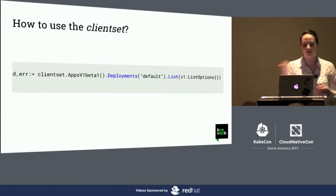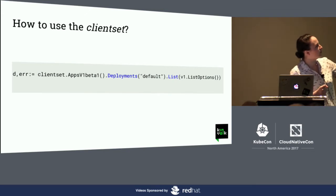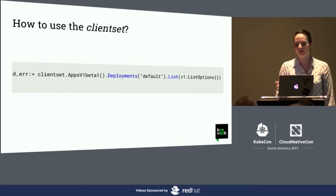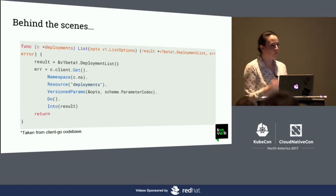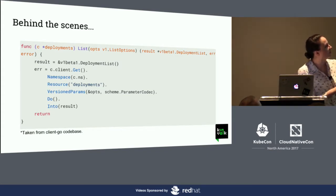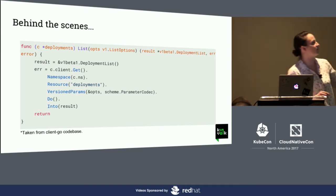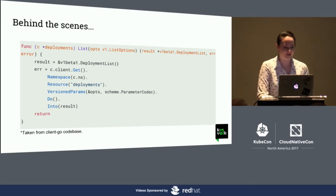Once you have the client set, this is how easy it is to actually communicate. To list deployments, all you need to do is access through the client set the deployments resource and list all the resources in the default namespace. You can pass in parameters like field selectors or labels. What actually happens behind the scenes is that it's basically just an abstraction or a helper — it's just a GET request, nothing more than that. It makes your life much easier so you don't have to reimplement everything yourself. It's quite powerful.